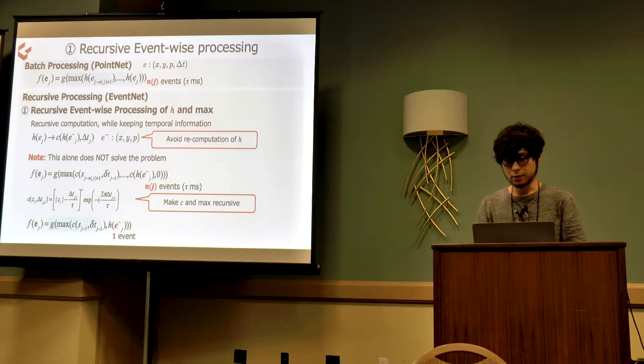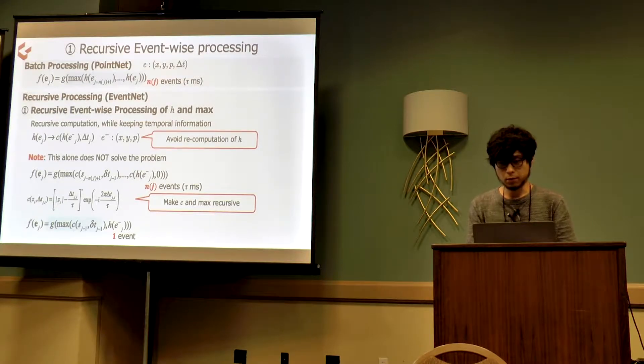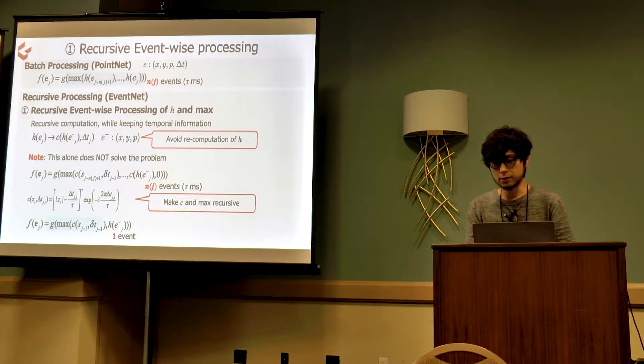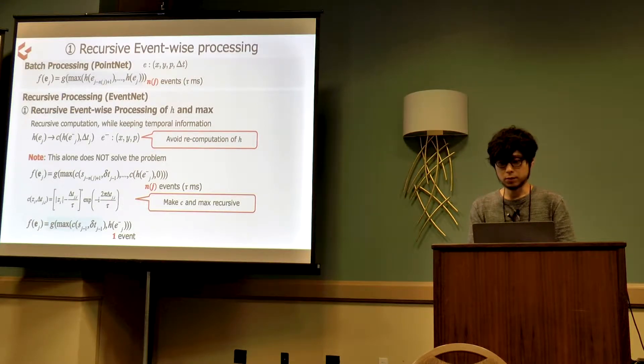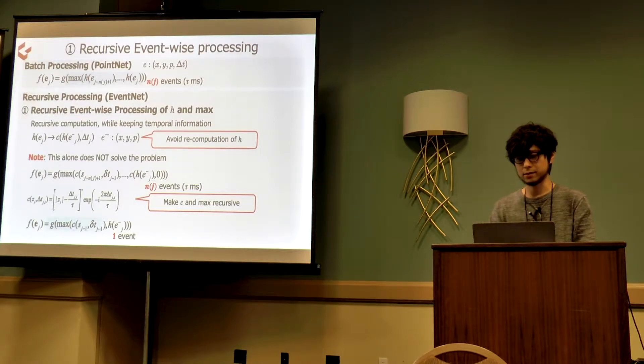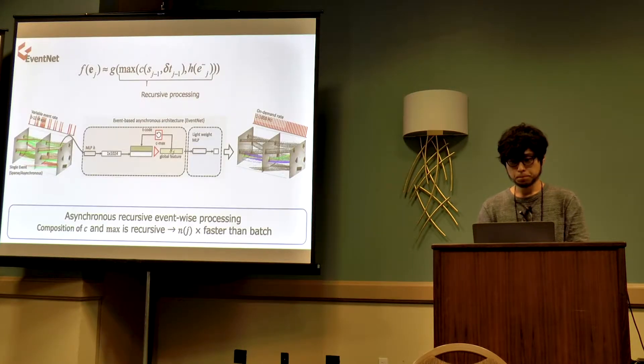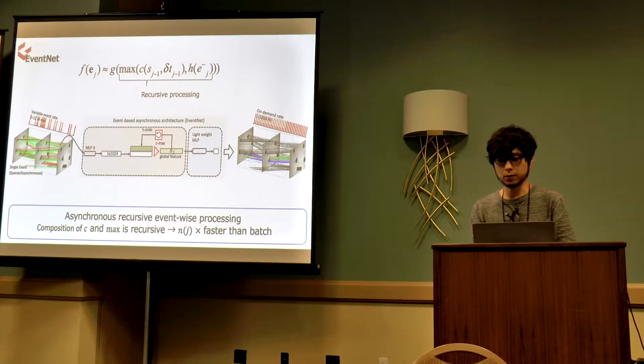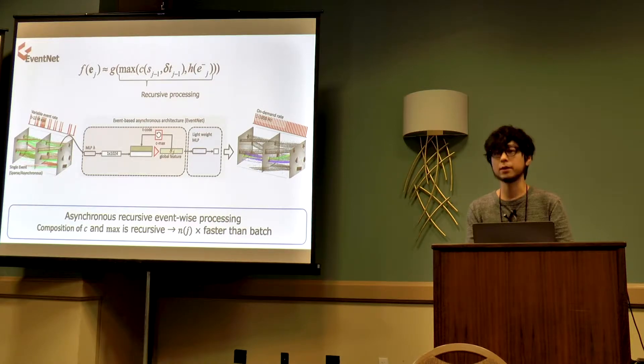The first contribution is recursive processing. To avoid recomputation of H, we replace it by composition of another H, followed by temporal coding function C. Obviously, by this replacement we need to compute H only once for each observed event. However, I want to note that C and max still need to compute for all nj events every time a new event arrives. We designed a temporal coding function C, which decays and rotates input linearly to elapsed time, so that the composition of max and C to be recursive. As a result, we get the following EventNet model, which has favorable characteristics for sequential event processing.